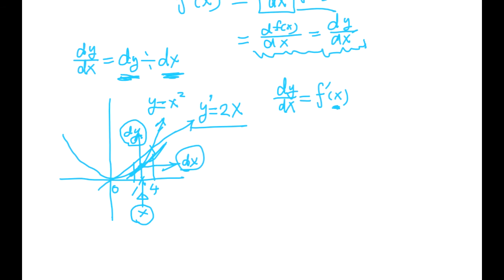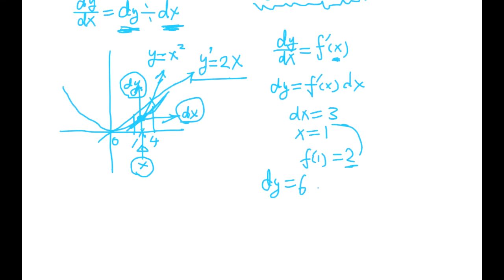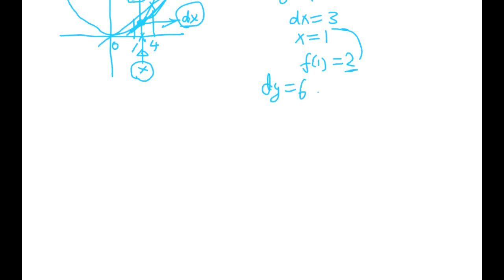So we have a linear function on this new coordinate. This is a new coordinate just created at the point x. This is the point x. Okay? This new coordinate, we have a linear function, that line going through the origin of the coordinate. So dy equals f'(x)dx. So if dx is 3 at x equals 1, what happens?